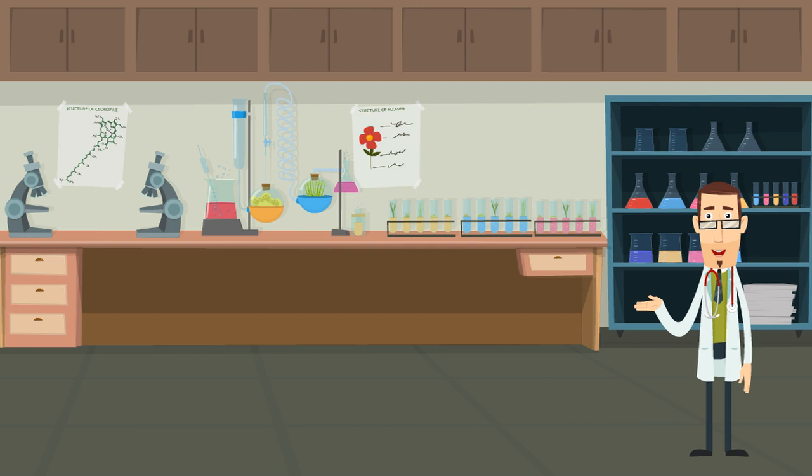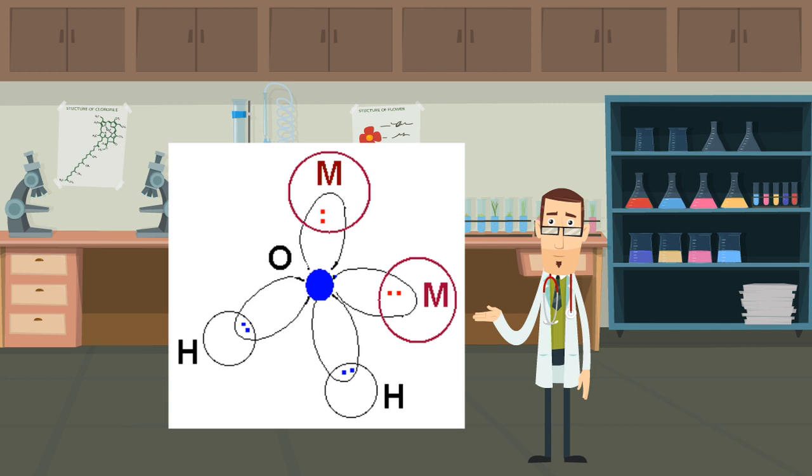However, a Lewis base such as H2O with less than one lone pair of electrons can act as a bridging ligand. The ligand acts as a bridge between the metal ions.